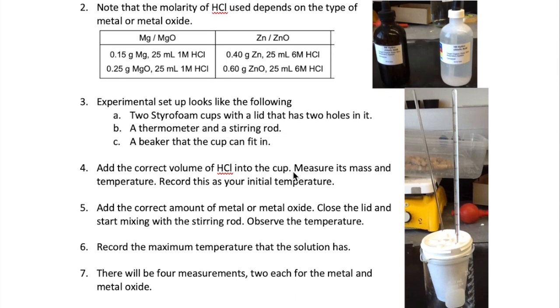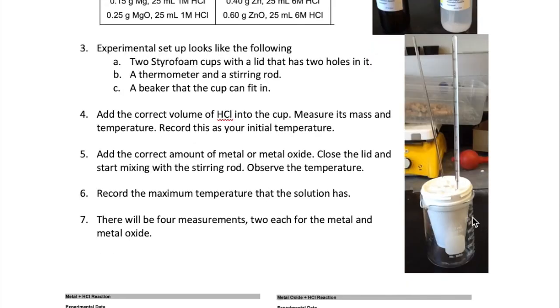You should set up your calorimeter as follows. Put one styrofoam cup into another one to provide insulation for the heat and get a lid for the cup. The lid should have two holes in it to insert a thermometer and a stirring rod. Lastly, you want to get a beaker that allows the cup to fit snugly. The beaker will prevent the cup from tipping over and spilling the content of the reaction.